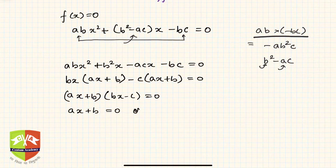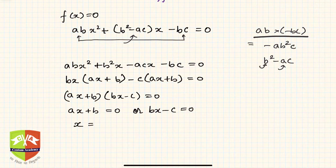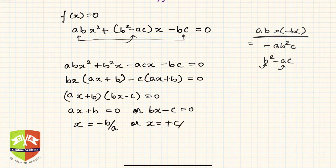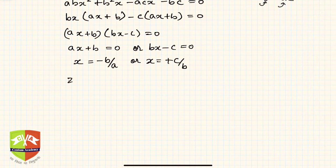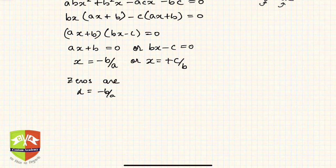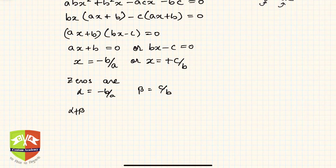So (ax + b)(bx - c) = 0 means either ax + b = 0 or bx - c = 0, giving x = -b/a or x = c/b. The zeros of the quadratic polynomial are α = -b/a and β = c/b.